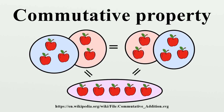Related properties — Associativity: The associative property is closely related to the commutative property. The associative property states that the order operations are performed in does not affect the final result, as long as the order of terms doesn't change. In contrast, the commutative property states that the order of the terms does not affect the final result. Most commutative operations encountered in practice are also associative. However, commutativity does not imply associativity — a counterexample is a function which is clearly commutative but not associative. More such examples may be found in commutative non-associative magmas.